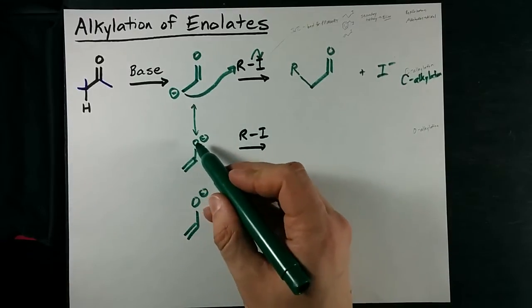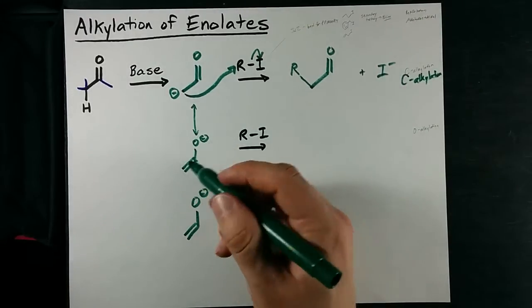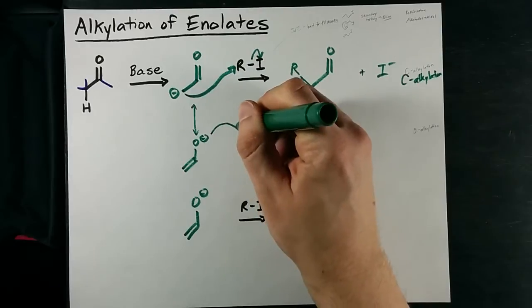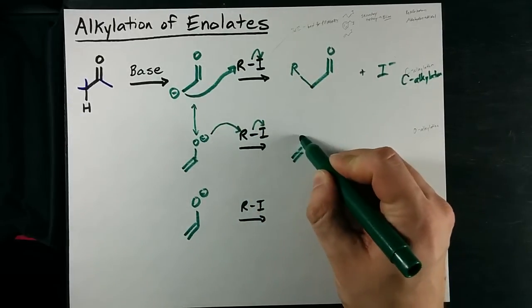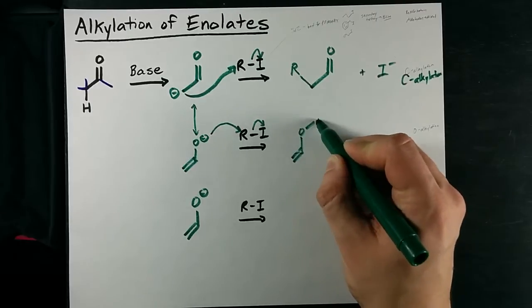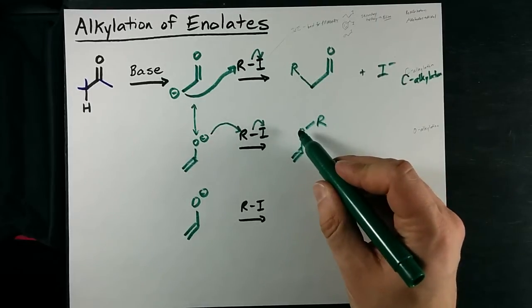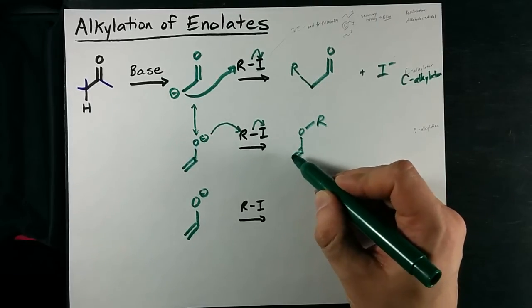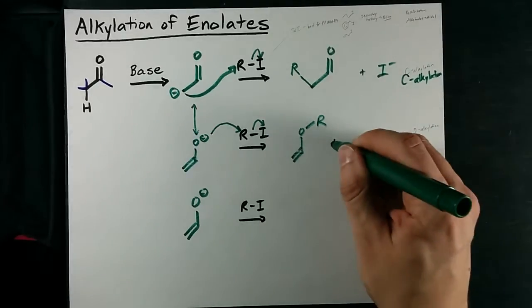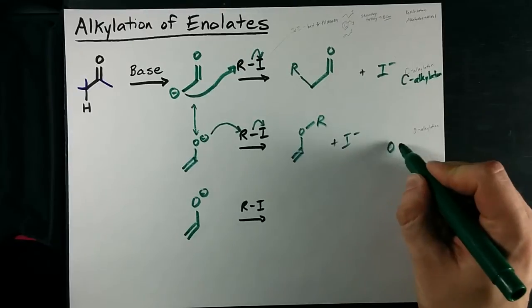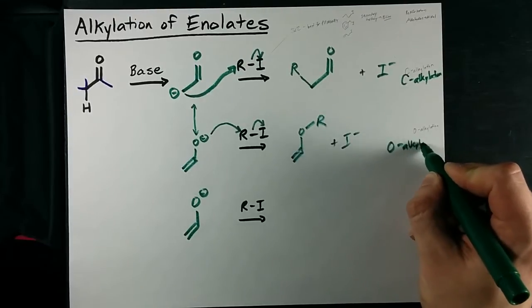Here, we have the minus charge shown to be on the oxygen, and it could theoretically attack the R as well. Double bond here, O with an R. Here, we have an ether that has a double bond a little farther down the chain. We still have the I minus created, and we call this O-alkylation. Cool?